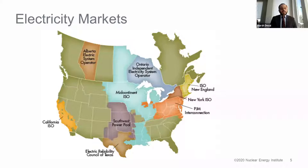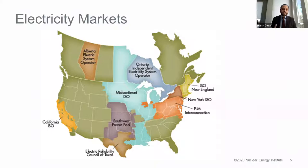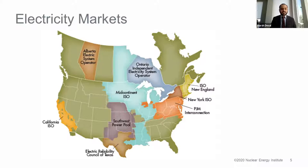Once electricity is generated from a power plant, it is distributed and transmitted by a couple of means — all through independent system operators. There are two kinds of markets we typically look at: regulated markets, where states compensate power generators for the cost of electricity, and wholesale markets, also called competitive or deregulated markets. The independent system operators include ERCOT, PJM, MISO, and New England.